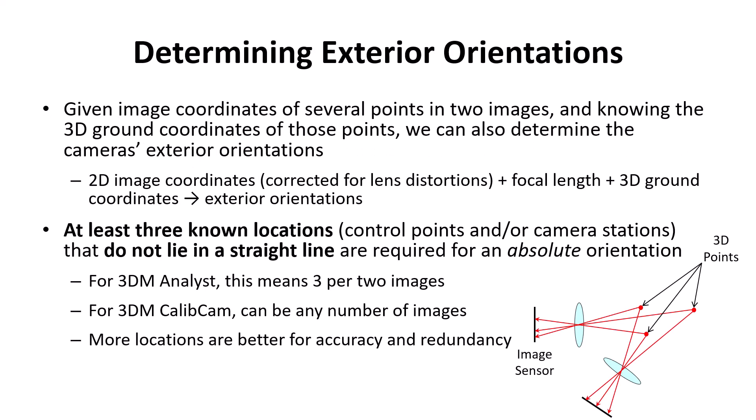You do the interior orientations first — you calibrate your camera lens first. The next step is to do exterior orientations. If you're given image coordinates of several points on two or more images, and you know the 3D ground coordinates of those points, we can determine the camera's exterior orientations. At least three known locations or control points that do not lie in a straight line are required for an absolute orientation.